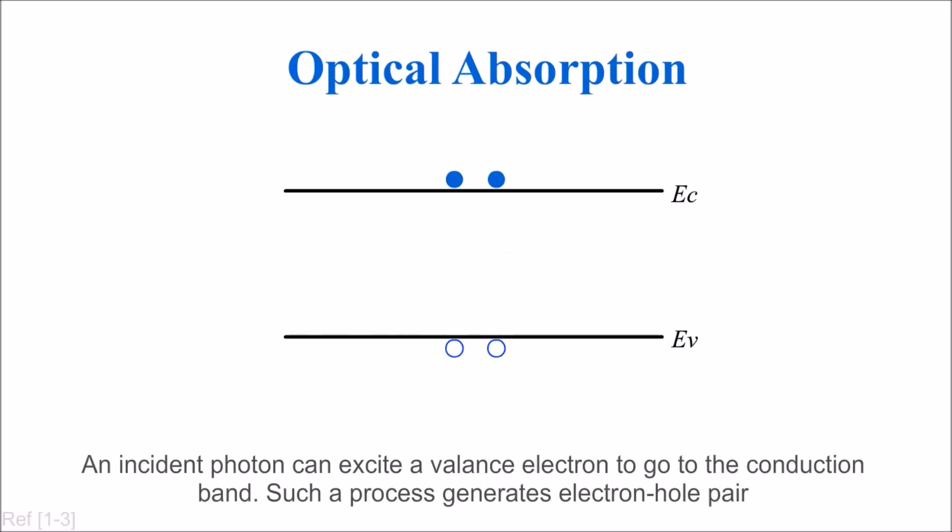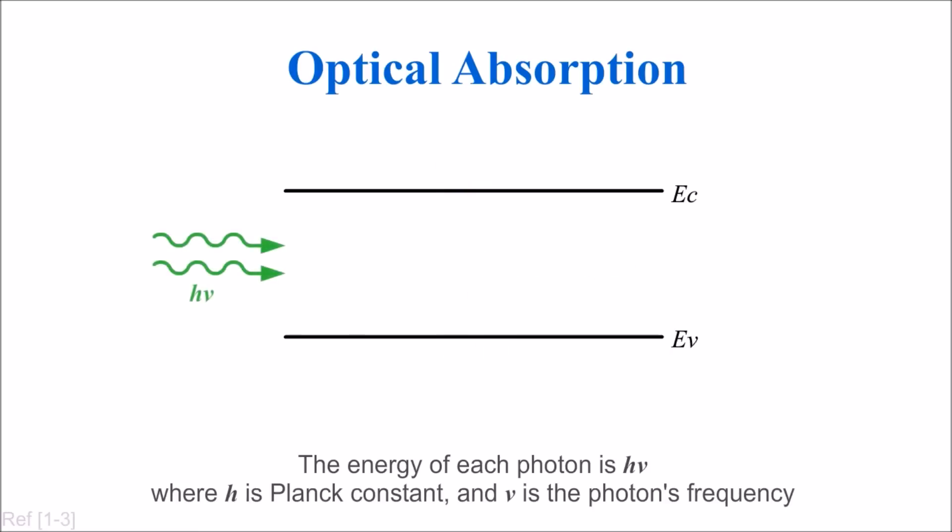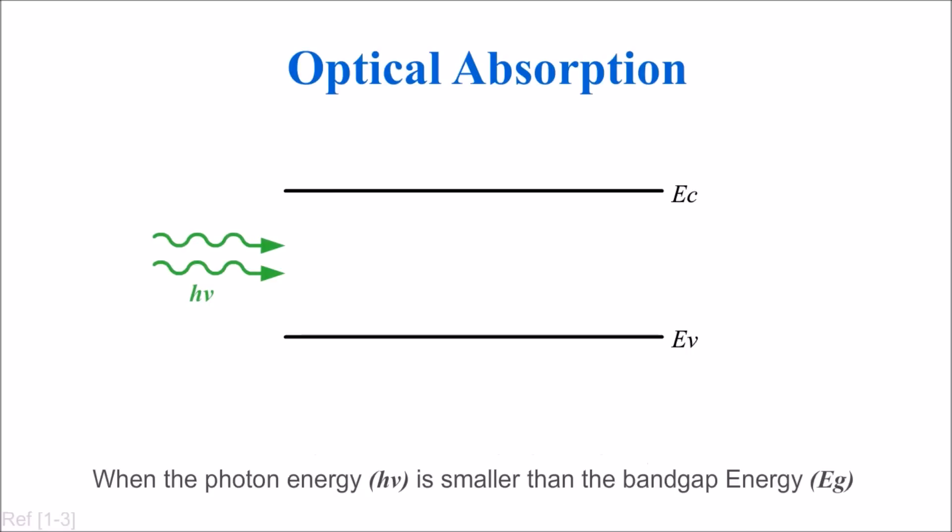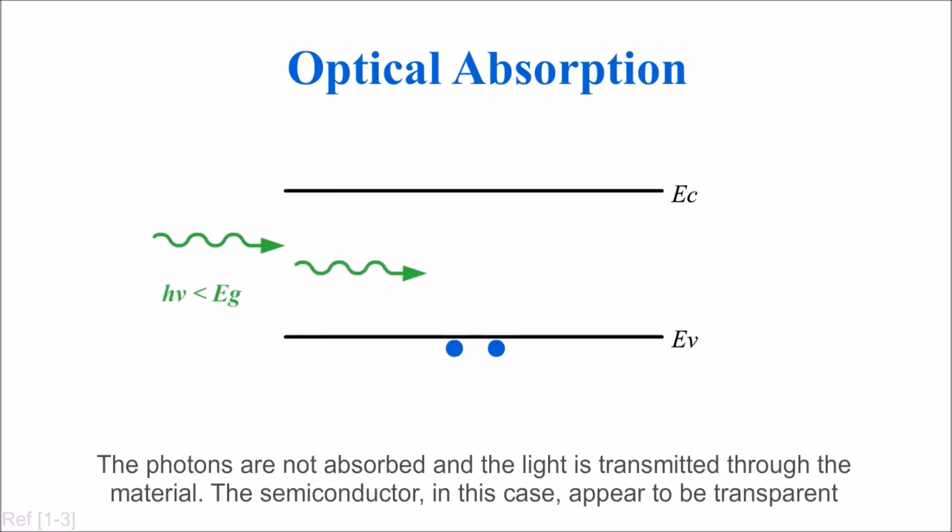Let us start with optical absorption. An incident photon can excite a valence electron to the conduction band, generating an electron-hole pair. The energy of each photon is hν, where h is Planck's constant and ν is the photon's frequency. When photon energy hν is smaller than the bandgap energy Eg, photons are not absorbed and the semiconductor appears transparent.